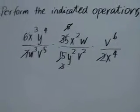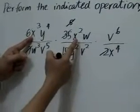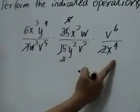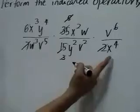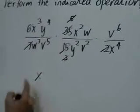For the x terms, x cubed and x squared gives x to the fifth, which when divided by x to the 4, so x to the fifth in the numerator, x to the 4 in the denominator, leaves us with x in the numerator.